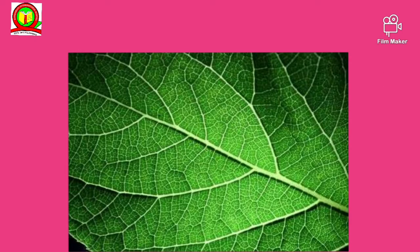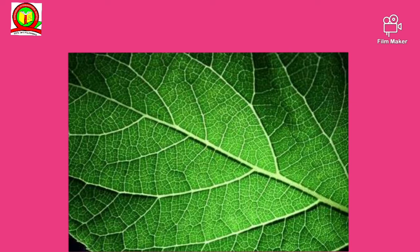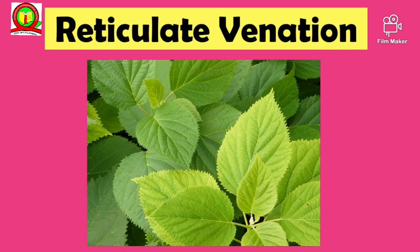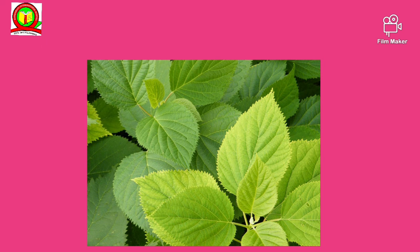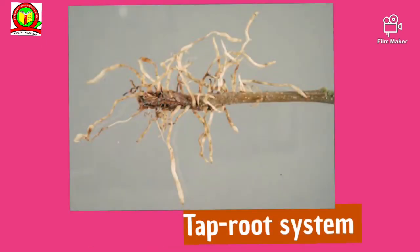In the plants with the tap root system, the veins form a net-like design on both sides of the midrib. This type of venation is called reticulate venation. For example, the hibiscus leaves have reticulate venation. So we can say the hibiscus has a tap root system.